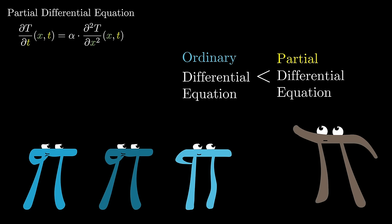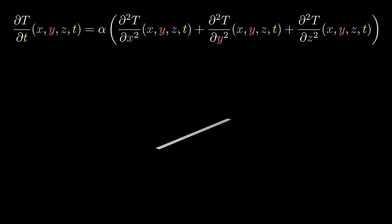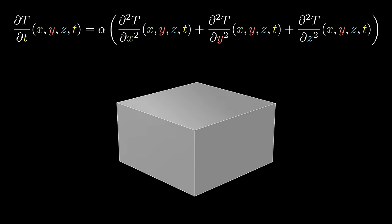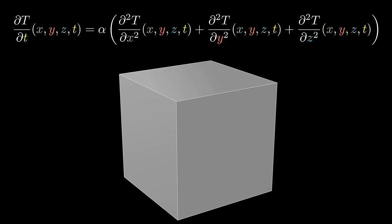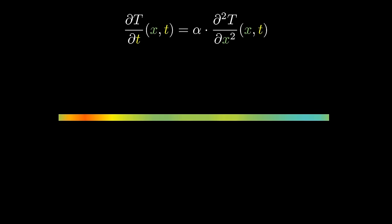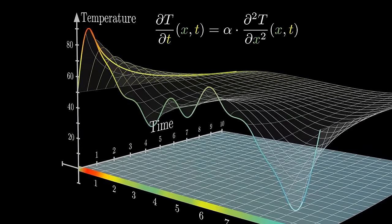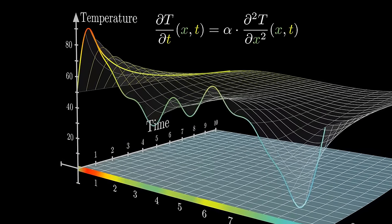The general heat equation applies to bodies in any number of dimensions, which would mean more inputs to our temperature function. But it'll be easiest for us to stay focused on the one-dimensional case of a rod. As it is, graphing this in a way which gives time its own axis already pushes our visuals into the third dimension.